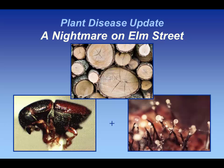The first recording of this disease in the United States was in 1930 in Ohio. The original description of the disease, and the reason it's called Dutch elm disease, is that it was originally described in Holland in the 1920s, around 1921, although the disease had been in Europe much longer than that. There were reports close to the turn of the century, certainly in the 1910s, of the disease being relatively widespread in the Netherlands and France.